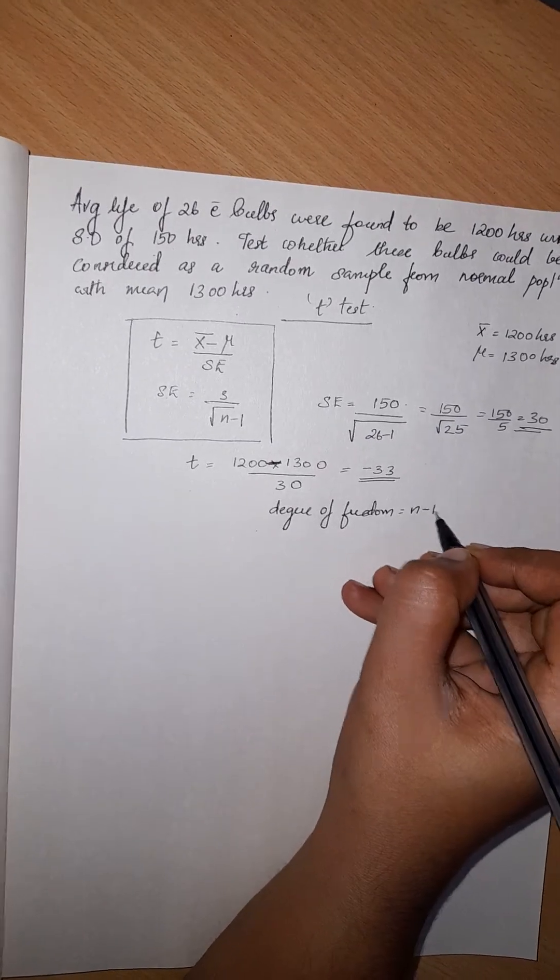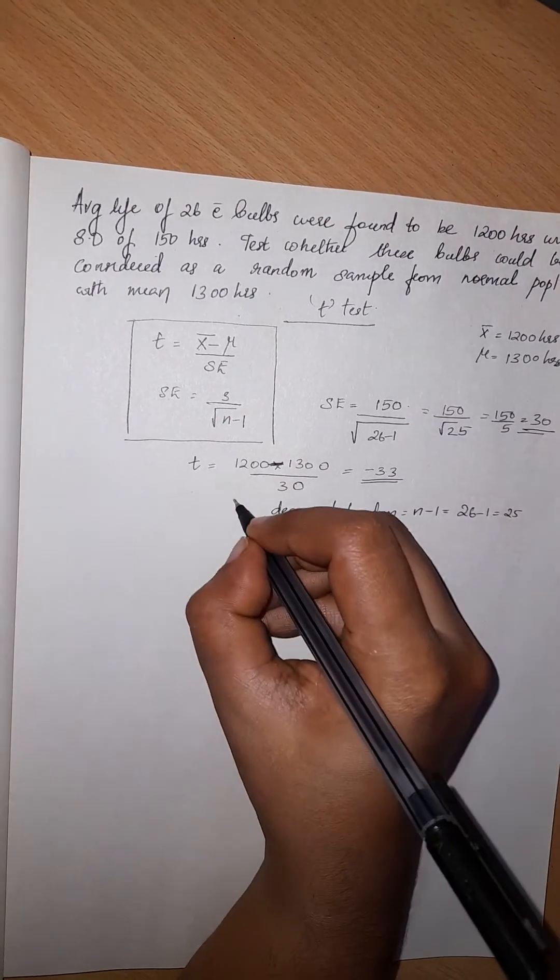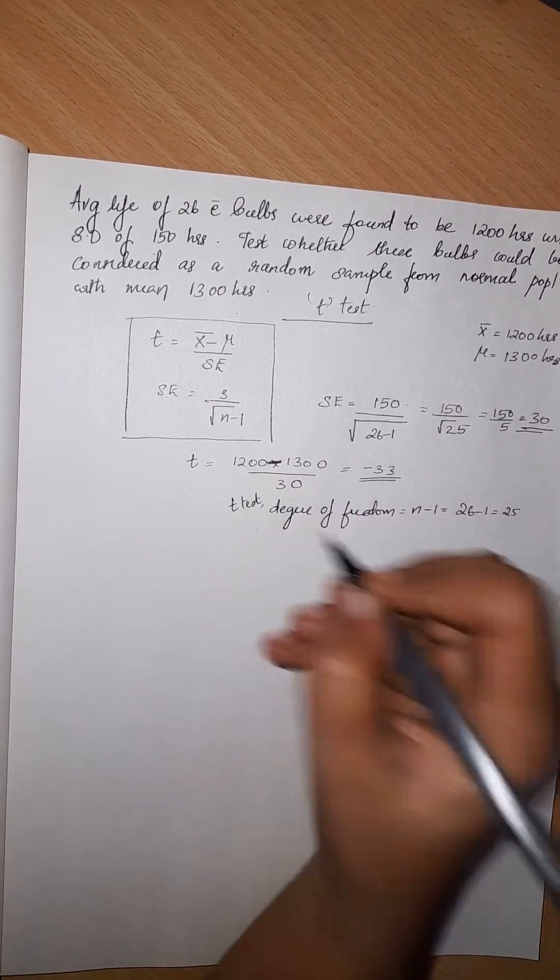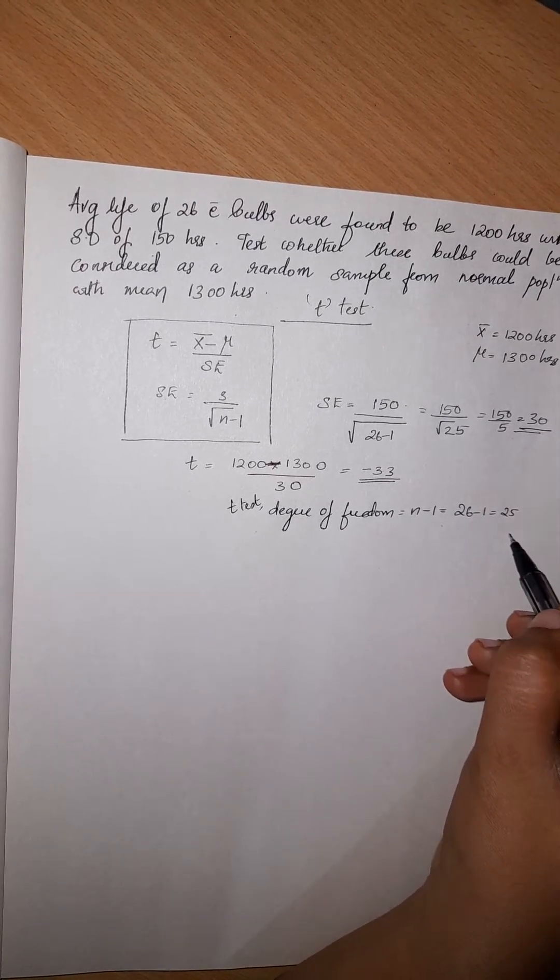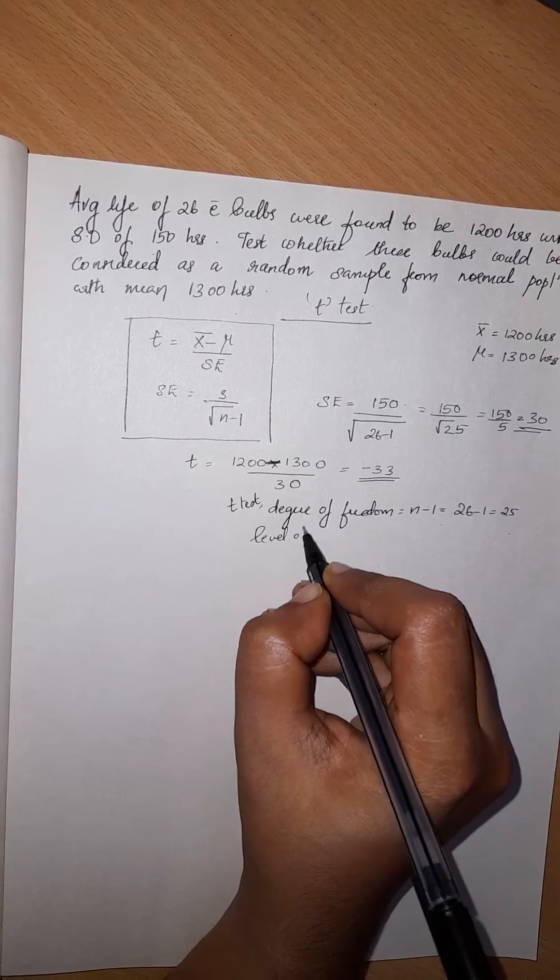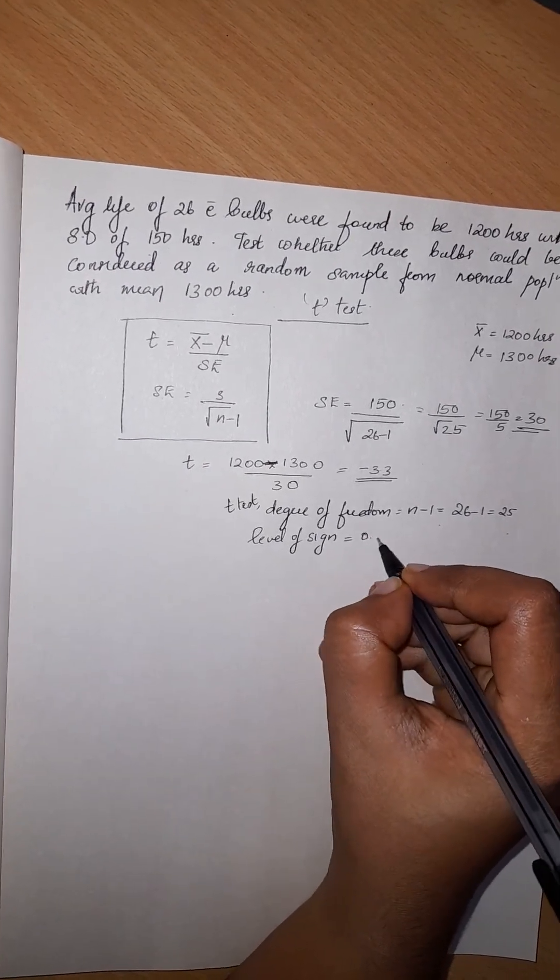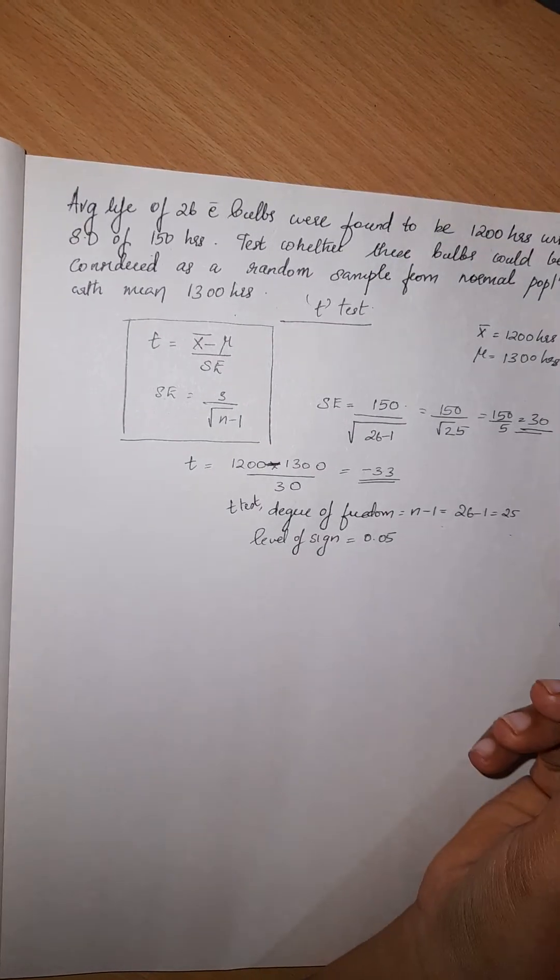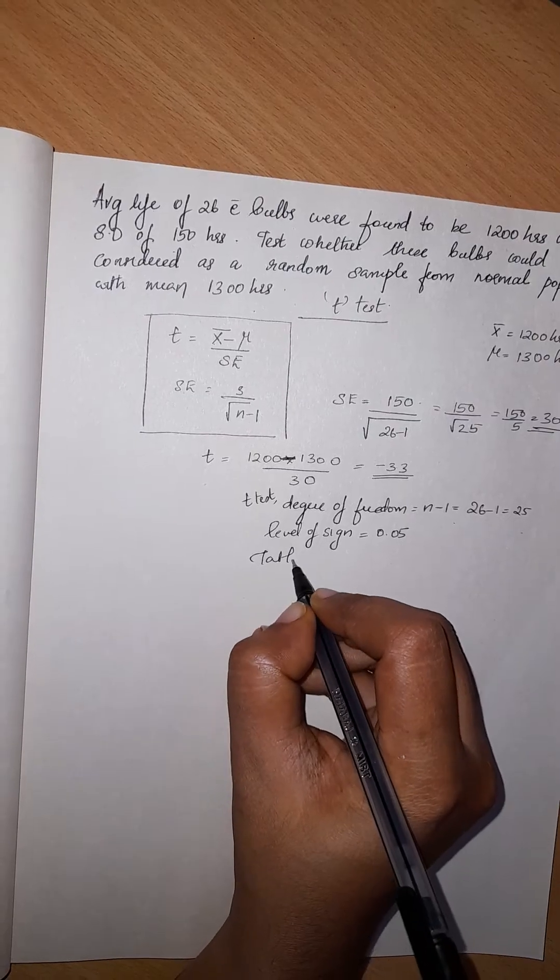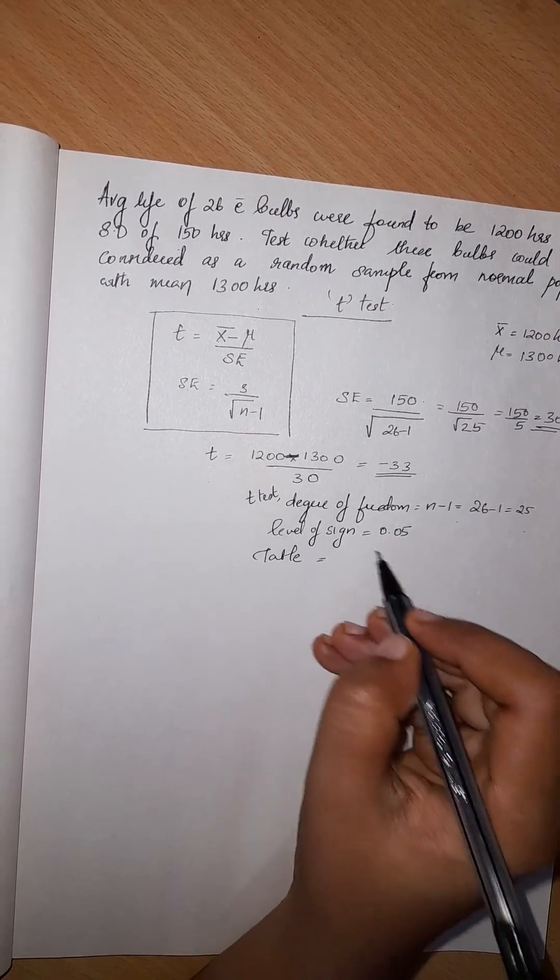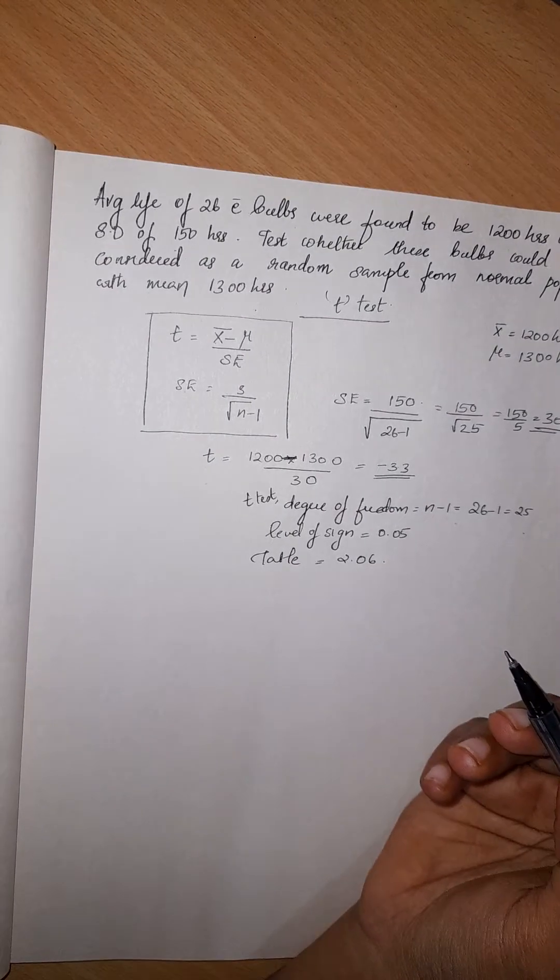Degree of freedom is equal to n minus 1, that is 26 minus 1, which is equal to 25. In the t-test, the degree of freedom is 25. The level of significance is 0.05. The table value is 2.06.